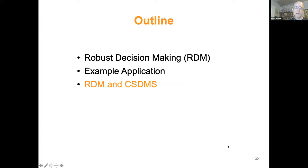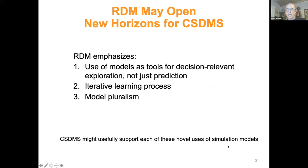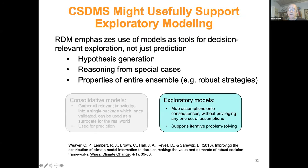Let me conclude with some comments about how these ideas might be useful for this community. RDM emphasizes first the use of models as a tool for decision-relevant exploration, not just prediction. It emphasizes iterative learning processes, and it emphasizes model pluralism. CSDMS might usefully support each of these novel uses of simulation models. There are a variety of things you can do with exploratory models — hypothesis generation, reasoning from special cases, and looking at properties of the entire ensemble, of which the idea of robust strategies is one case.